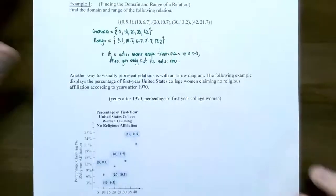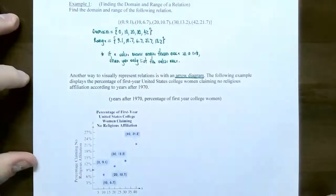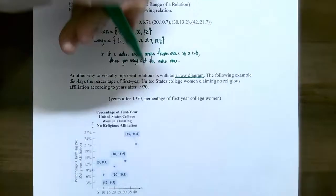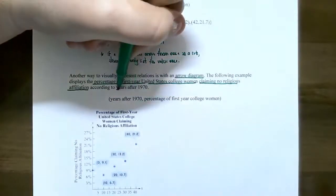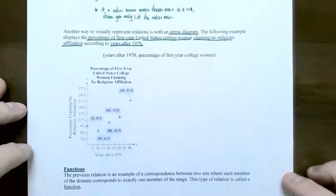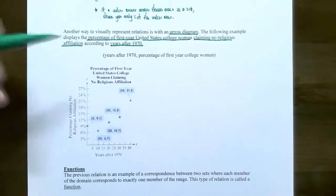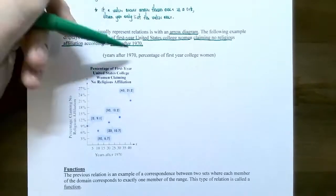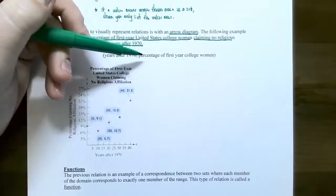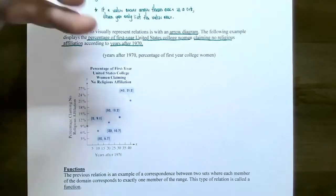One way you can represent a relation is with a set of ordered pairs. However, there's a more visual way using an arrow diagram. The following example displays the percentage of first-year United States college women claiming no religious affiliation after 1970. The horizontal axis is years after 1970, and the vertical axis is the percentage claiming no religious affiliation. Let's take the five plotted points and construct an arrow diagram.